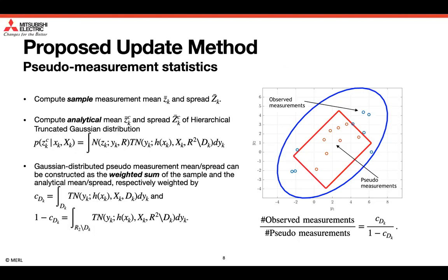Next, we compute the analytical mean and spread of the hierarchical truncated Gaussian distribution, for which the density support of the truncated Gaussian is complement of the truncated Gaussian involved in the hierarchical truncated Gaussian distribution of the observed measurements. Then the Gaussian distributed pseudo measurement statistics can be constructed as the weighted sum of the sample statistics and the analytical statistics, respectively weighted by their corresponding truncated Gaussian integrals.